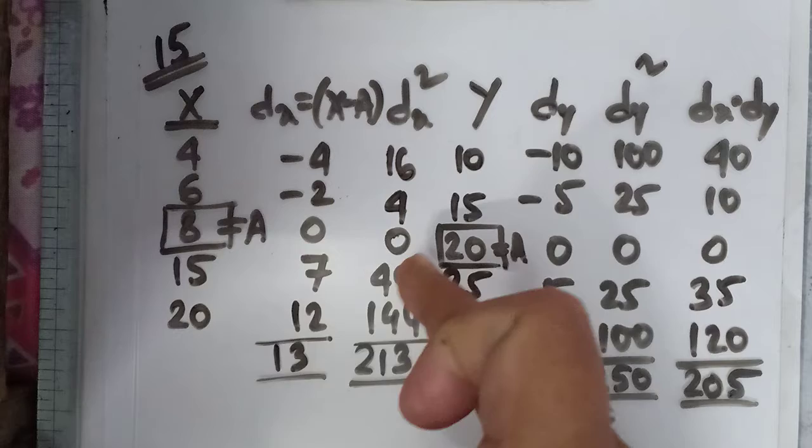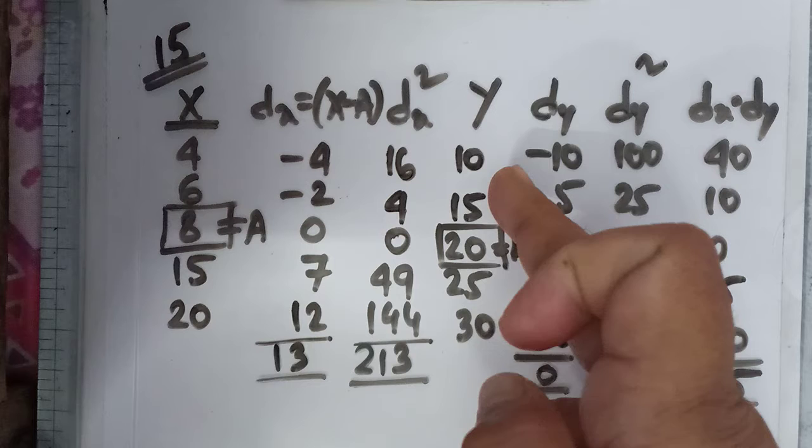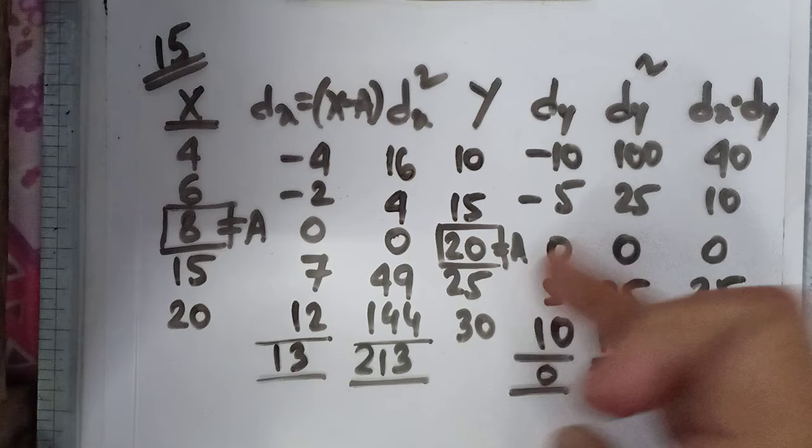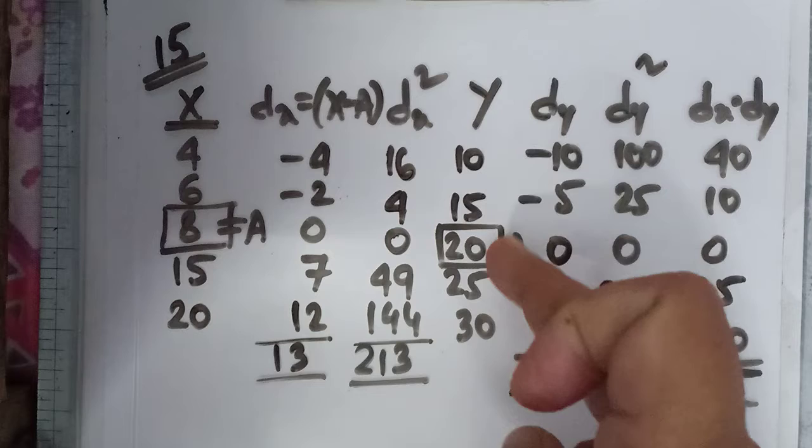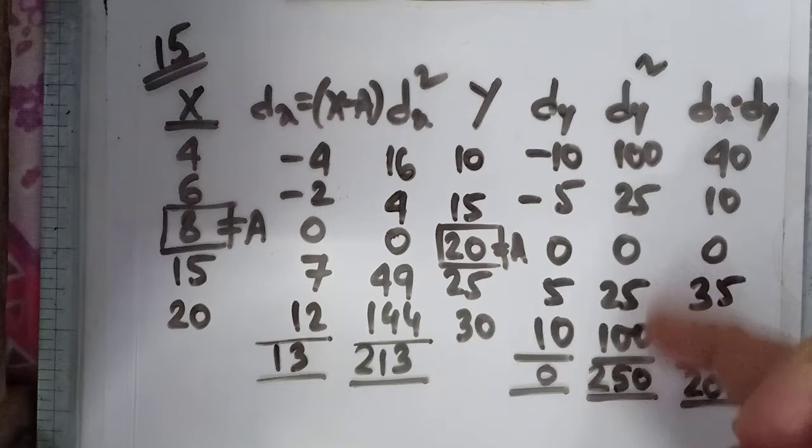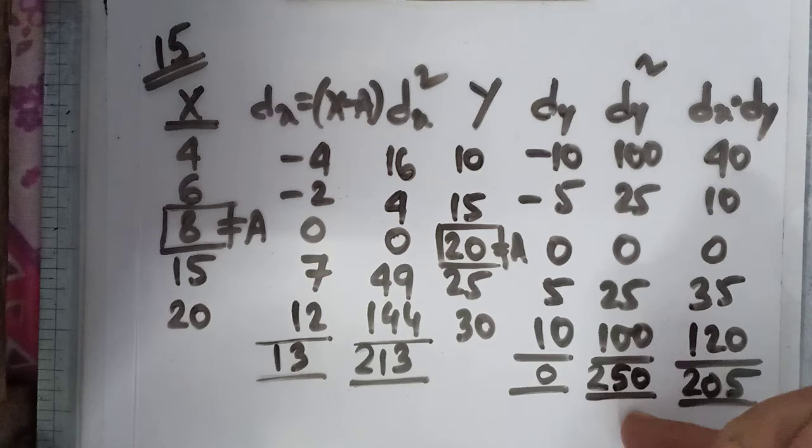Then take the values of y as given: 10, 15, 20, 25 and 30. Take the assumed mean as 20 and the same process, find the dy, the deviations with 10 minus 20, 15 minus 20 and so on. Find the sum of dy, define dy square for each value: 10 square, minus 10 square, minus 5 square, 5 square, 10 square. Get dy square summation.